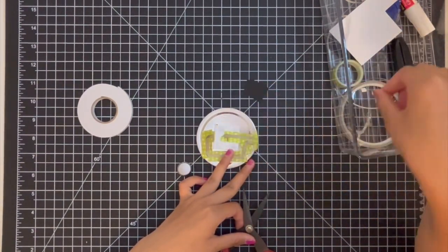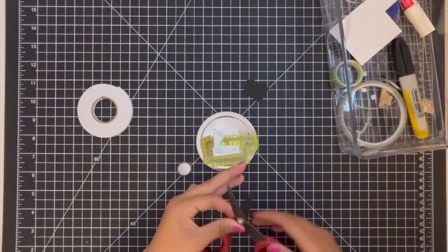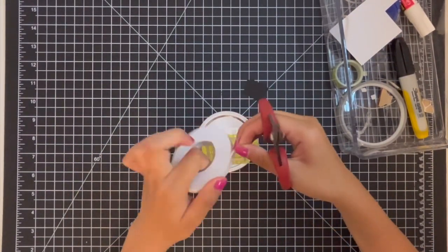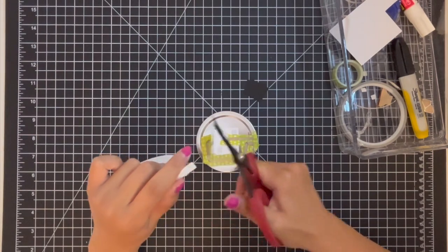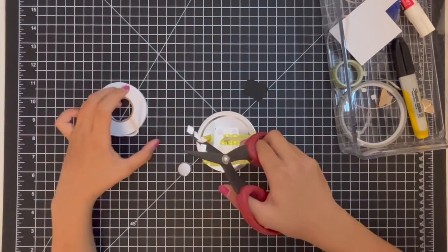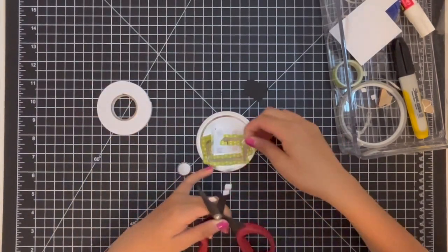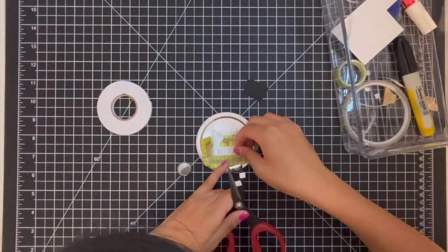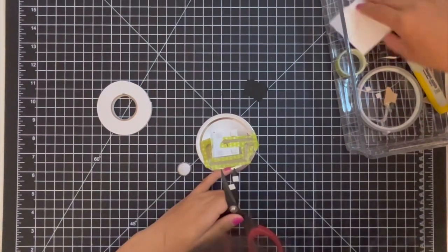However, when pressure is applied, the conductive particles move closer to each other and allow more electricity to flow through, resulting in a brighter light. The harder you press, the closer the conductive particles are to one another and the brighter the light becomes. It's super cool how this pressure-sensitive plastic works.